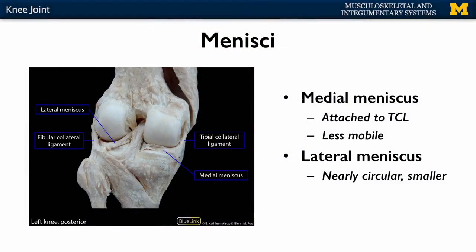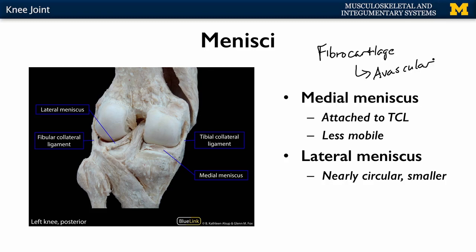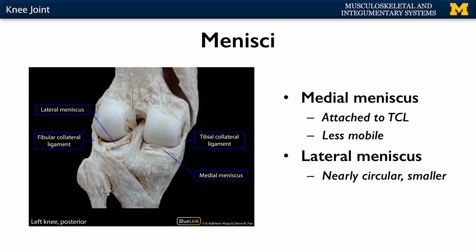The meniscus is composed of fibrocartilage. Anytime you have cartilage, we're talking avascular — without blood supply — meaning that damage to this particular area is very hard to heal compared to other areas of the body. The medial meniscus is attached to your TCL. Then there's the stronger and more circular lateral meniscus, which has a bit more mobility and is much less likely to be damaged than the medial meniscus. This is a perfect place to have a meniscus because it sits within these very shallow tibial condyles, allowing for a better fit for the large femoral condyles.